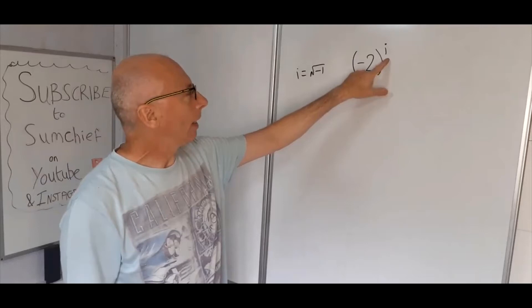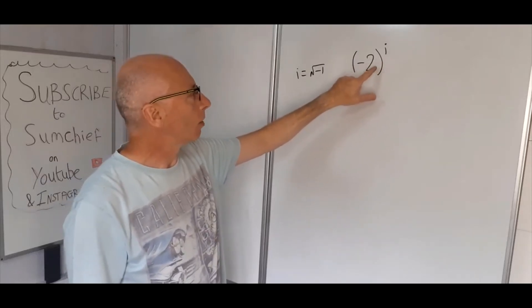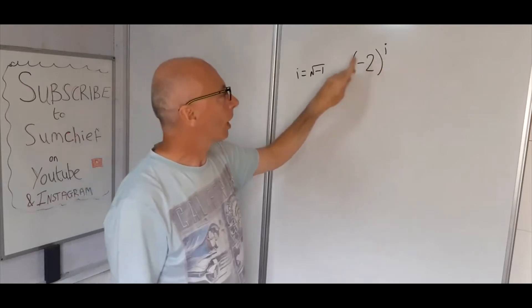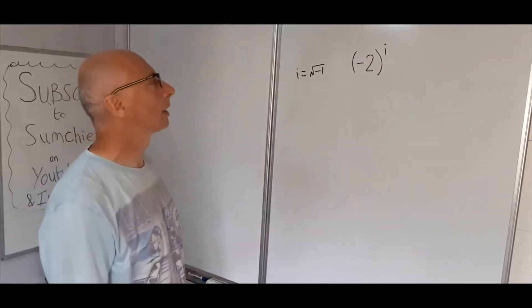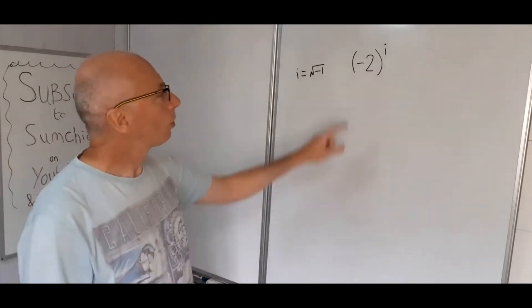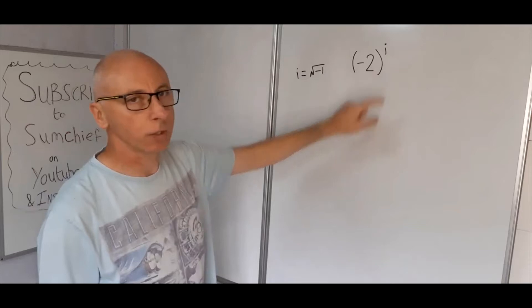How are we going to work out this though, with i in there? This doesn't make any normal sense here, so what we've got to try and do is work out a way of calculating this to make things a little bit easier to understand. So first of all, we take the log of the whole phrase here, minus two to the power of i.